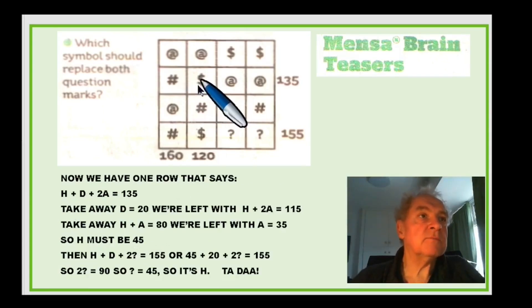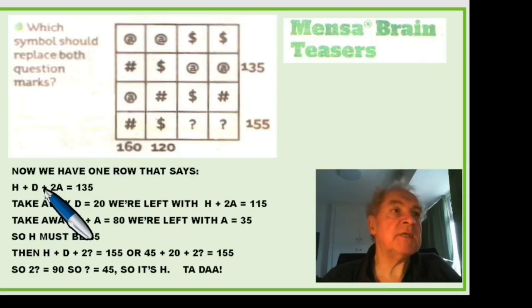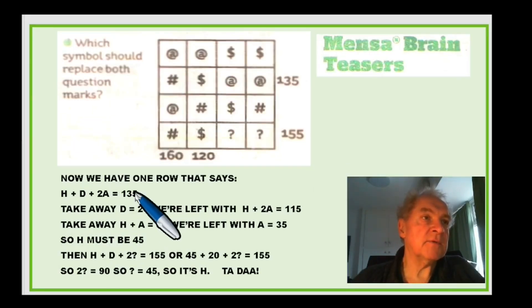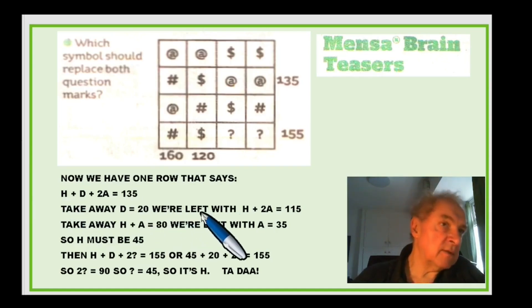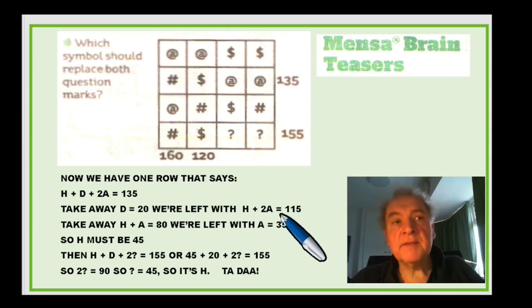Now we've got one row, this one which says H plus D plus 2A equals 135. Now we just worked out on the last slide that D equals 20. So we take 20 from this side from the right hand side but we take the D away from the left hand side. So we're left with on the left H plus 2A and then on the right we're left with 135 minus 20 which is 115. Now from this equation that we just got, we take away H plus A on the left and 80 on the right, this is the equation that we found first. So take away H plus A on the left, we're left with A, and we take 80 away from the right so we're left with 35. So you're just left with A equals 35. Now if A equals 35 and then you go back to H plus A equals 80 then take A from that side to 35 on this side. You're just left with H equals 45. H must be 45.